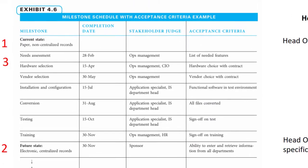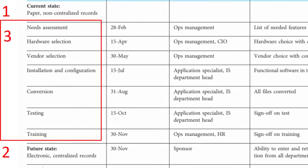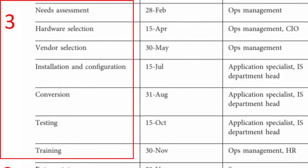Next, determine a few points in the milestone column where quality needs to be verified. This will usually be 3 to 8 points depending on the project, and these should align to the project's deliverables. In the digital records example, the deliverables may be: needs assessment, hardware selection, vendor selection, installation and configuration of the system, conversion of paper-based files to digital, testing the system, and providing training. These would also be the major deliverables.